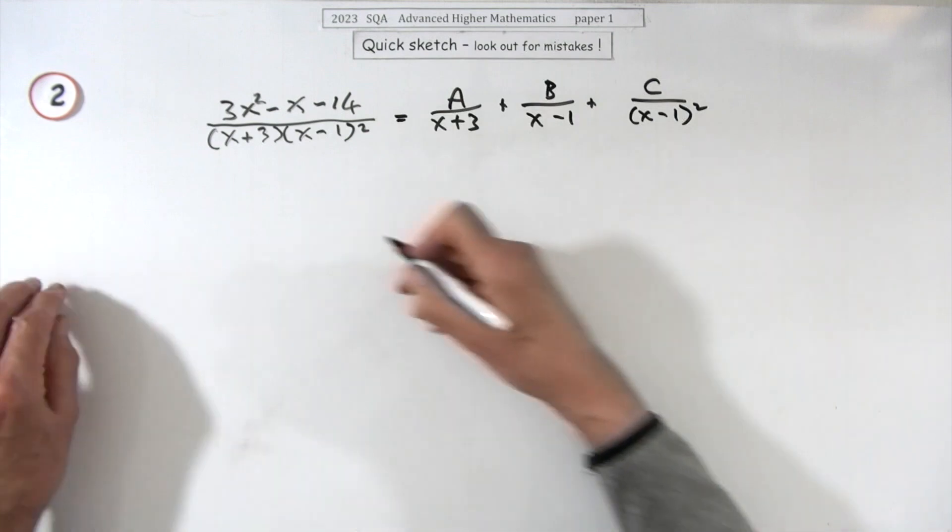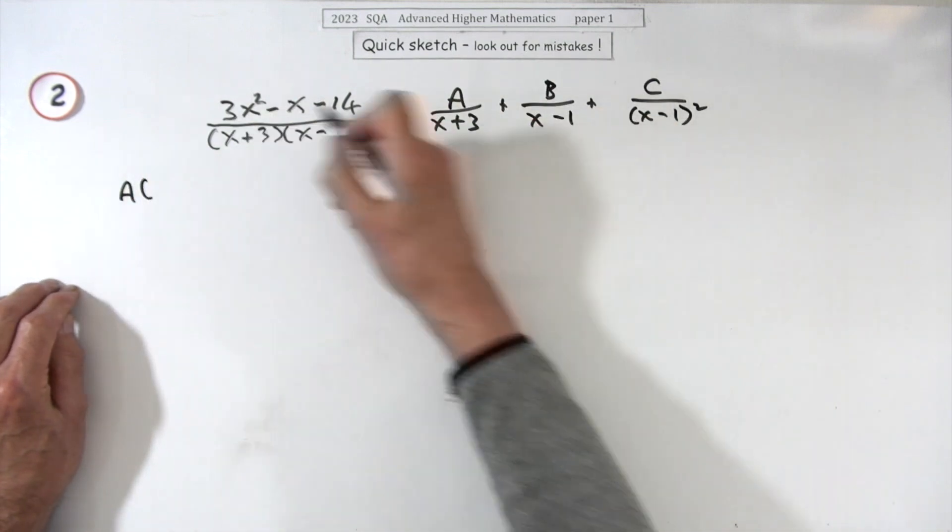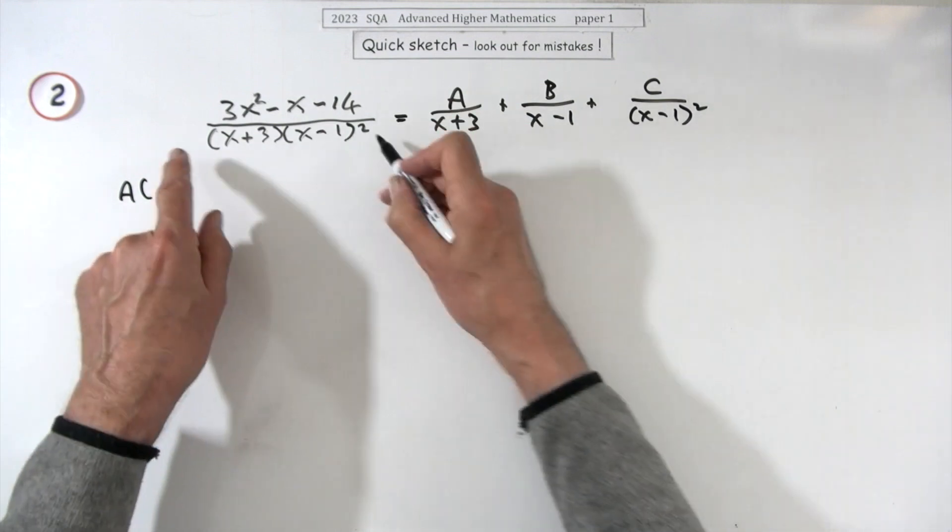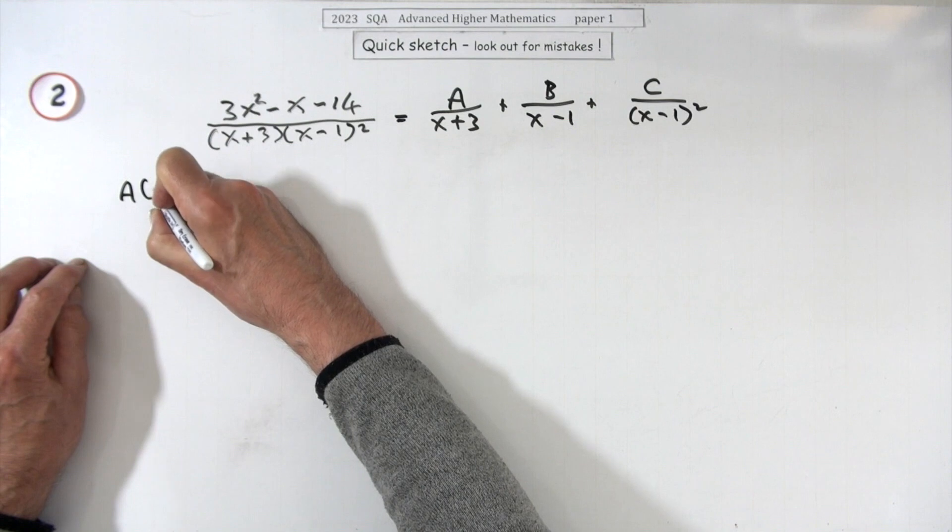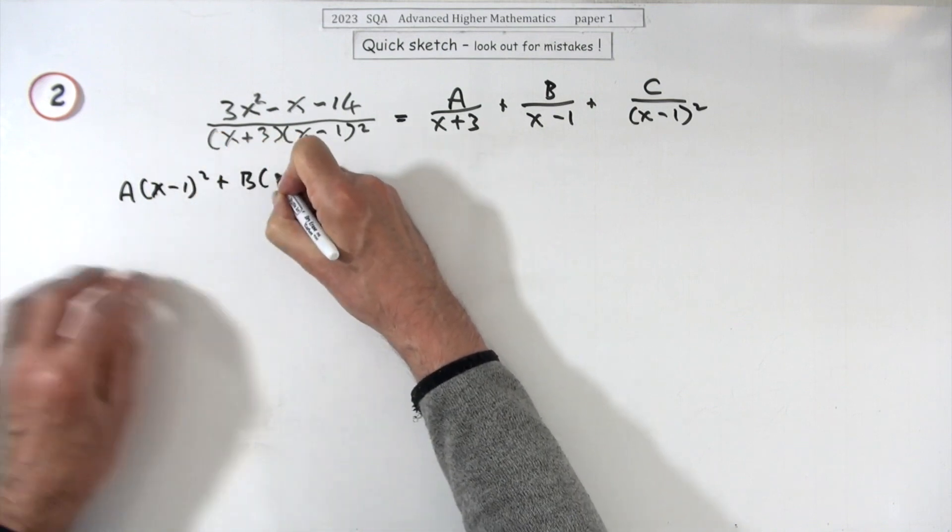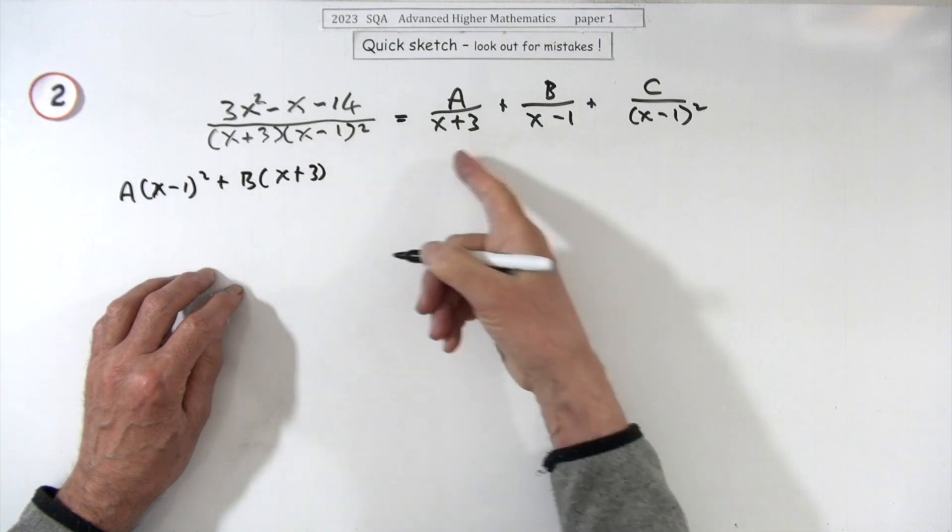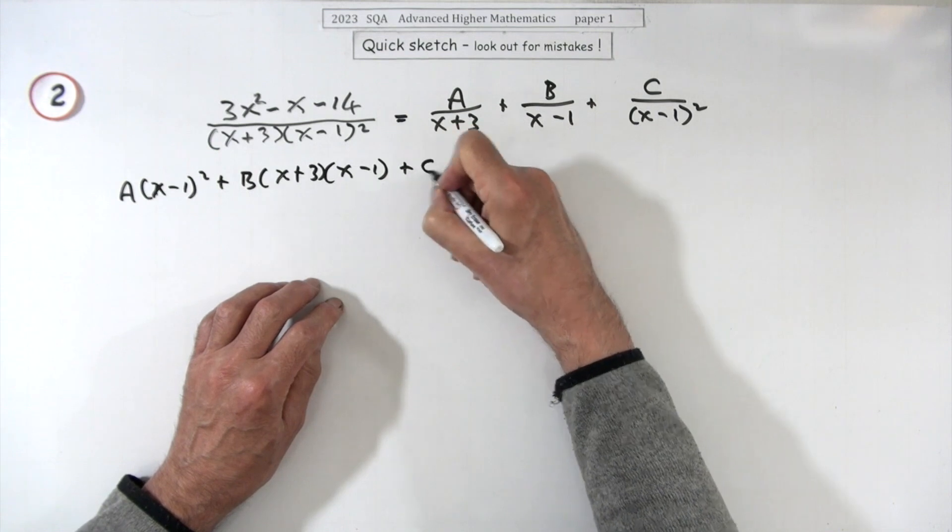Right, putting that back into a single fraction would give you this. That numerator should equal that numerator—just effectively think of cross-multiply. So A will be multiplied by the (x-1)², B will have to have the (x+3) and another (x-1), and the C just needs the (x+3).